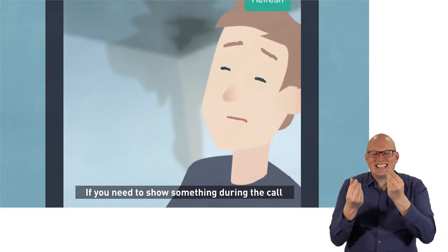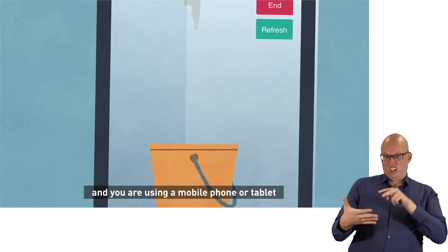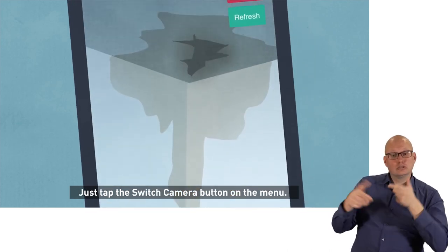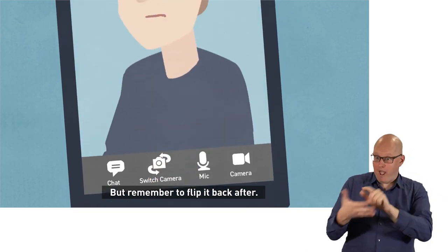If you need to show something during the call and you are using a mobile phone or tablet you can flip the camera round to give a better picture. Just tap the switch camera button on the menu but remember to flip it back after.